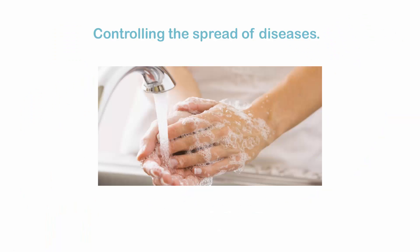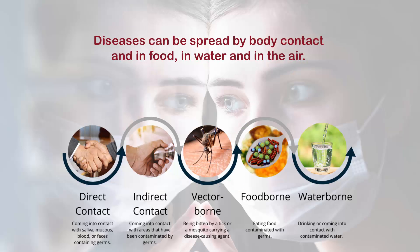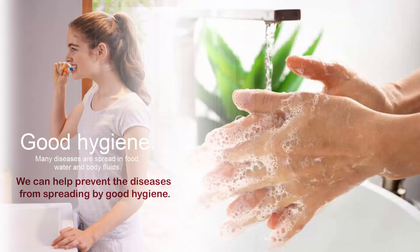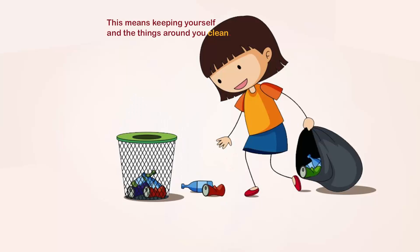Controlling the spread of diseases: diseases can be spread by body contact and in food, water and in the air. There are different ways we can help to control the spread of diseases. Good hygiene is one method — many diseases are spread in food, water and body fluids. We can help prevent diseases from spreading by practising good hygiene, which means keeping yourself and the things around you clean.